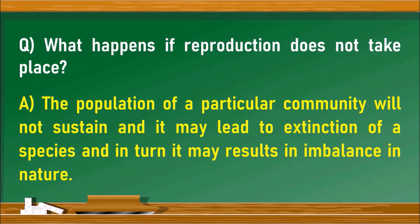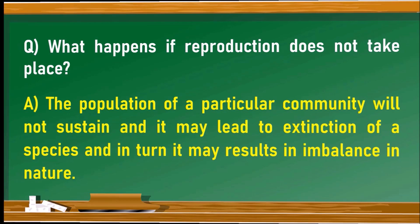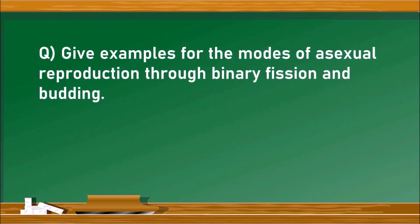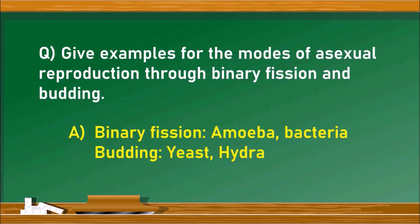Next question: give examples for the modes of asexual reproduction through binary fission and budding. The example for binary fission is amoeba and bacteria, which are unicellular organisms in which one cell divides into two cells. The examples for budding are yeast and hydra.